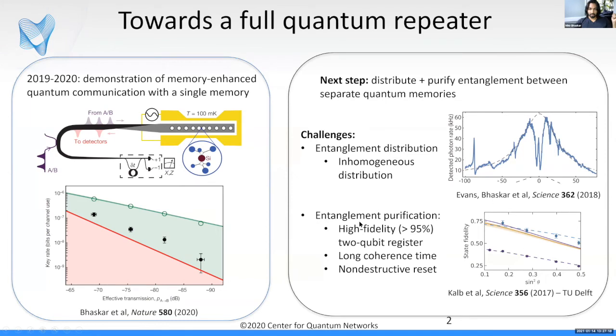The second challenge has to do with entanglement purification. You need really good local control of your register such that the local operations you use for entanglement purification, as well as things like readout, don't actually disturb the quantum states you're trying to store. There have been pioneering experiments at Delft showing entanglement purification, but with very little gain in terms of overall entangled state fidelity because you really need to push these fidelities very high. These are the challenges we've been tackling for the last year.